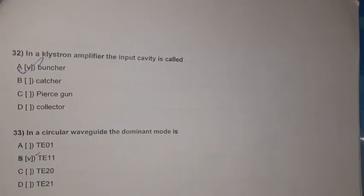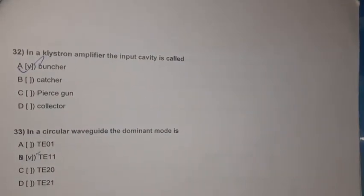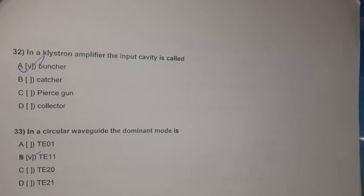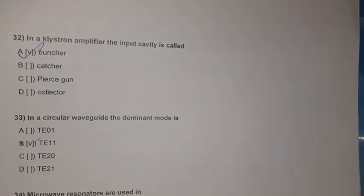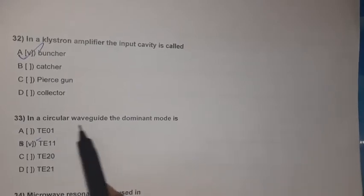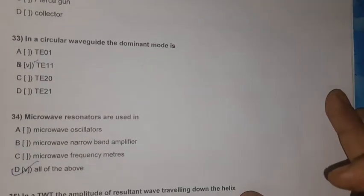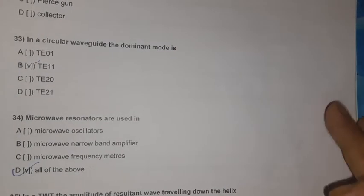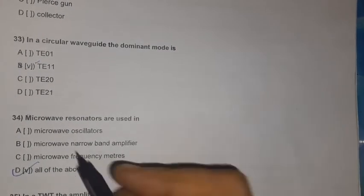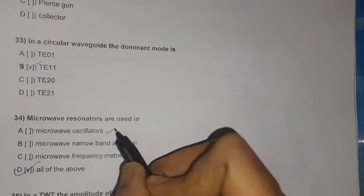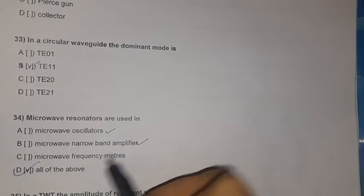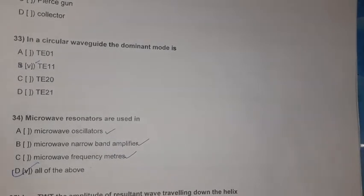Question 32: In a klystron amplifier, the input cavity is called the buncher cavity. Question 33: In a circular waveguide, the dominant mode is TE11. Question 34: Microwave resonators are used in microwave resonators, microwave narrowband amplifiers, and microwave frequency meters — all of the above.